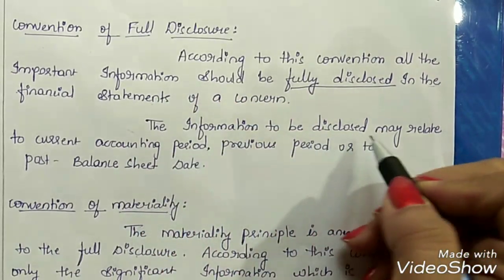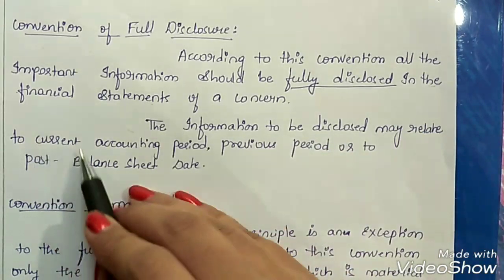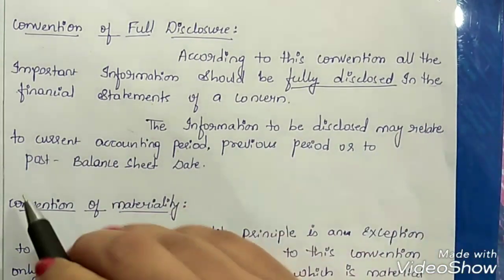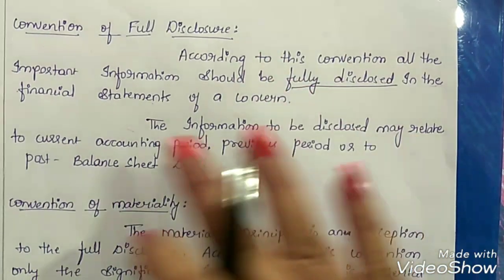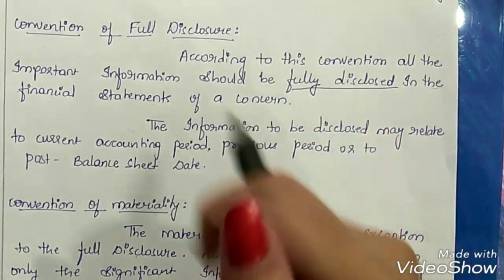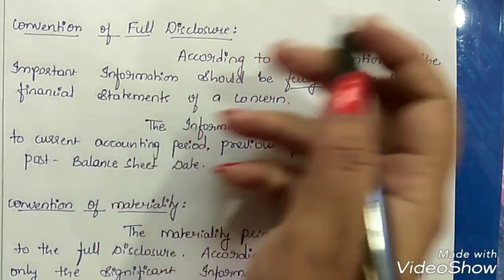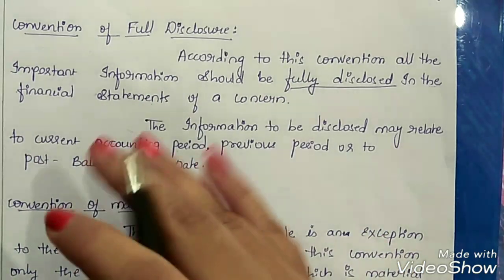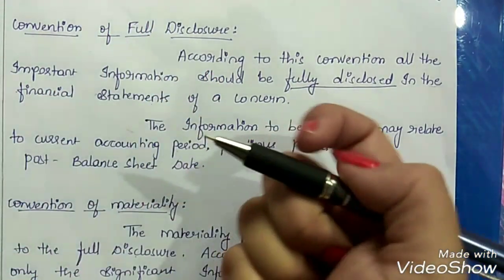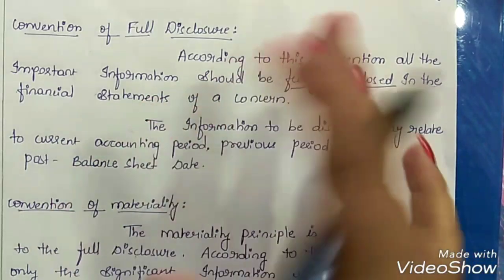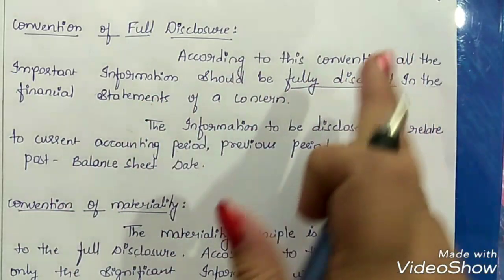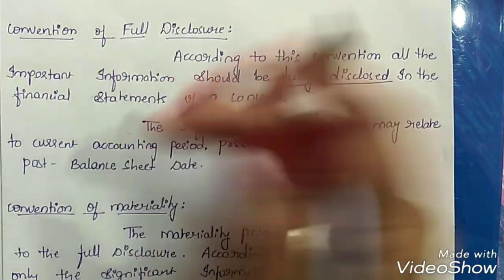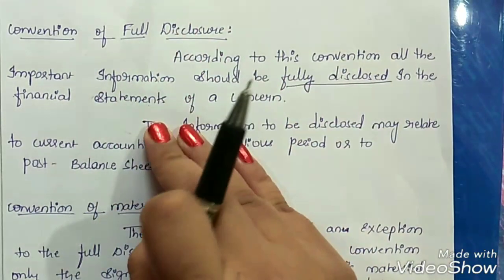The information to be disclosed may relate to the current accounting period, previous period, or post balance sheet date. It is not necessary that the information has to relate to the current accounting period only — information may be for the current period, previous period, or even the future. Whatever is important, it has to be disclosed.